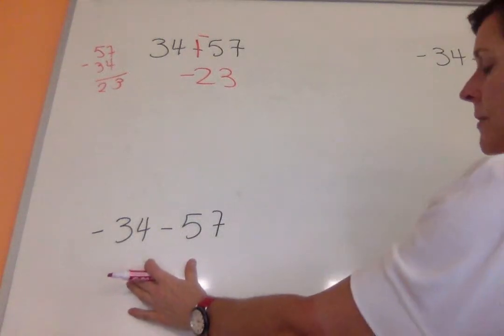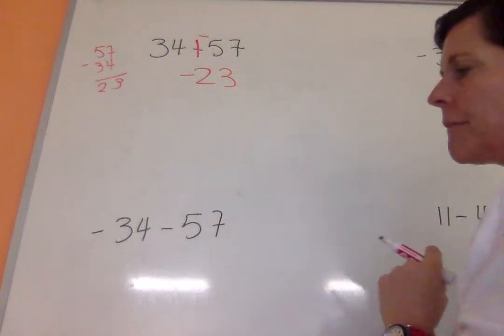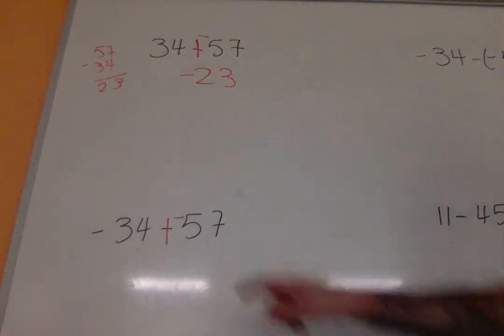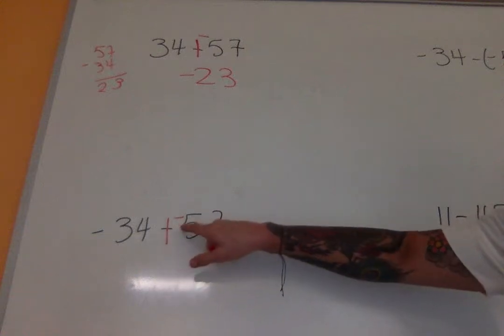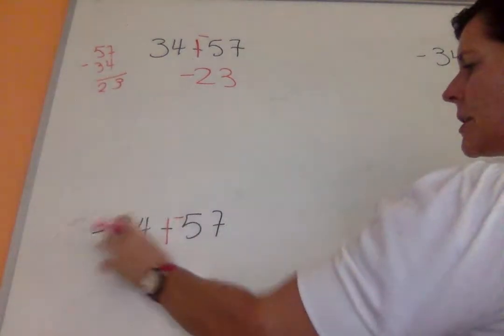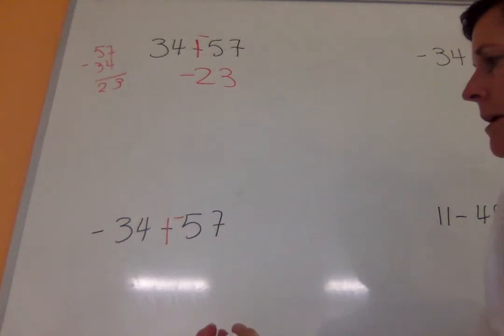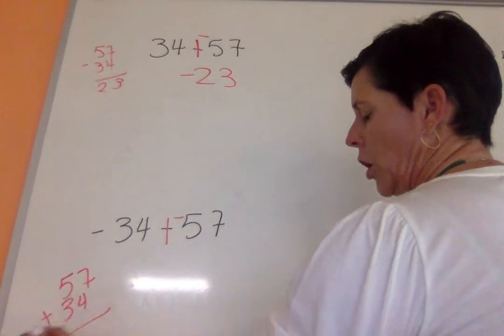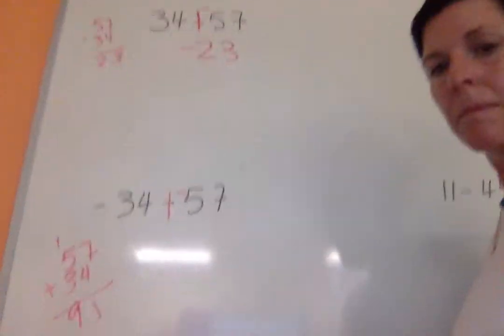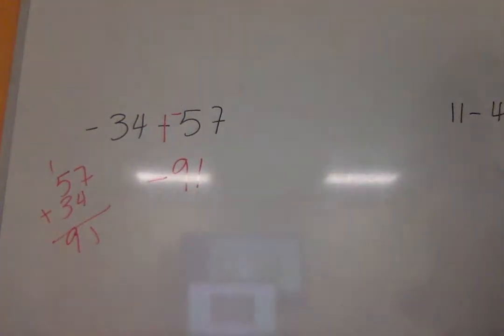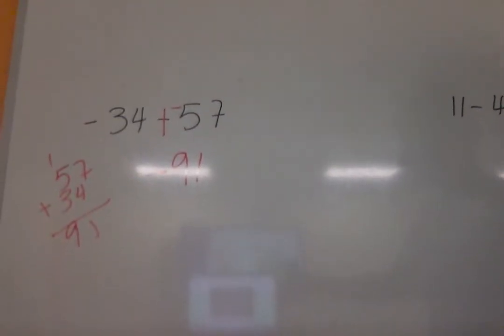Same numbers, different problem. Negative 34 minus 57. Once again, it's subtraction, so I have to add the opposite. So I'm just going to make subtraction a plus sign and make 57 negative. But are the numbers now, do they have the same sign? Yes, they're both negative. So remember when the signs are the same, you add. So now I have 57 plus 34, and that's 91. But both signs are negative, so I have to make that a negative 91.